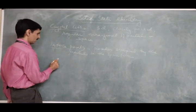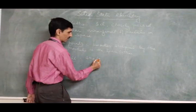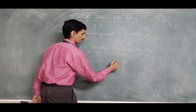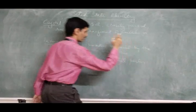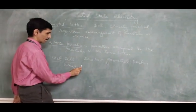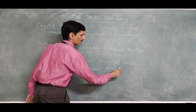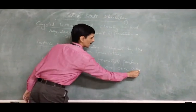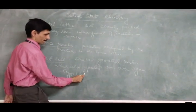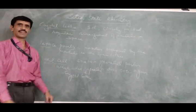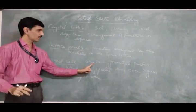Next we go for unit cell. Unit cell is the smallest geometrical portion which, when repeated over and over again, will give you the entire crystal lattice. That is basically called as unit cell. It is the smallest geometrical portion and it cannot be smaller than that.